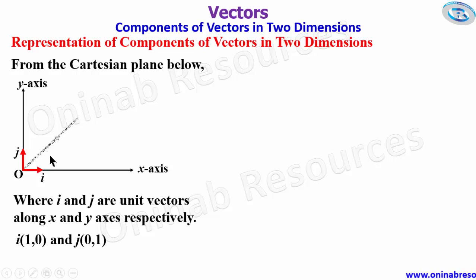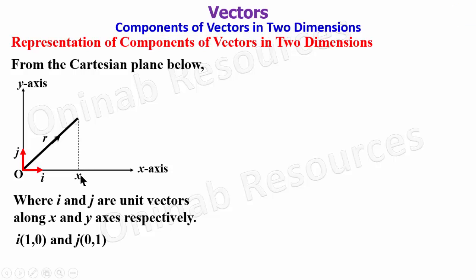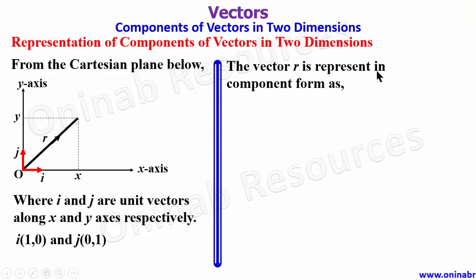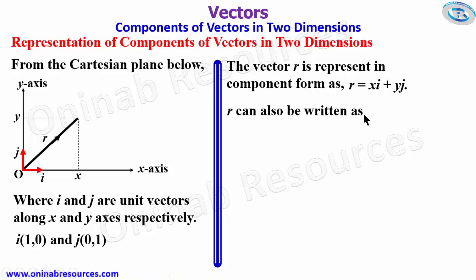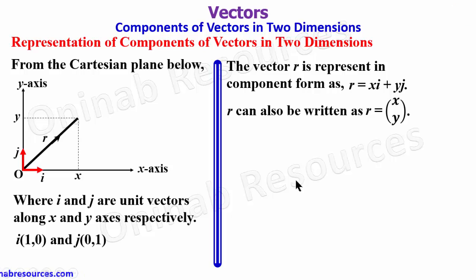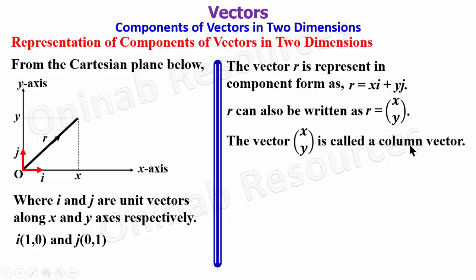We now consider a vector r. This vector r starts from the origin, and if we take the endpoint as x and y, the vector r is presented in component form as r = xi + yj. This is the i component and this is the j component, where x and y are scalars. For information, r can also be written as a column vector r = (x, y).